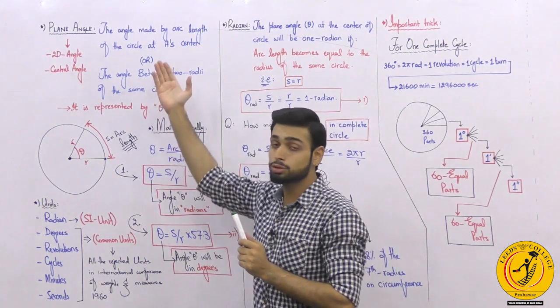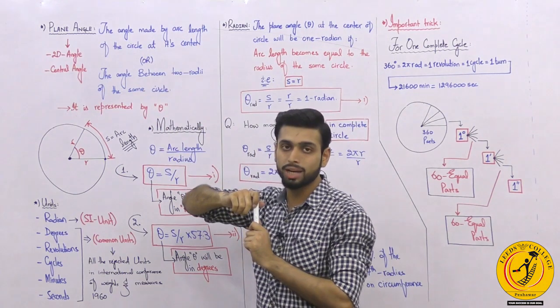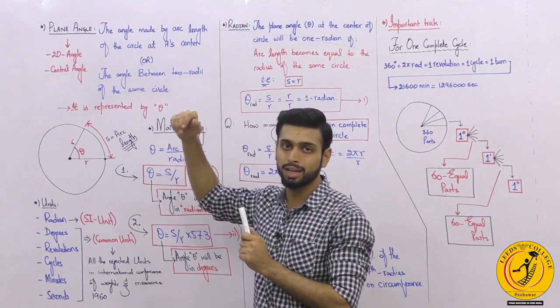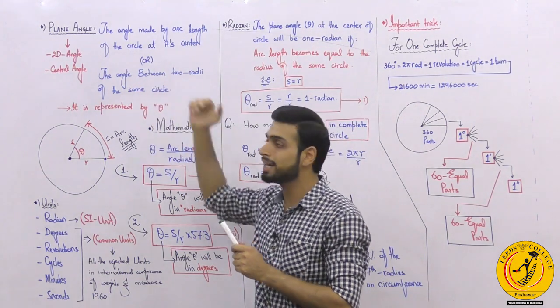Now why are we calling this plane angle? Why are we calling it central angle? Why are we calling it a 2-dimensional or 2D angle?